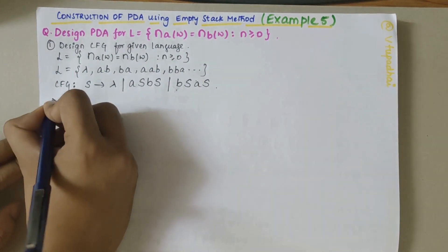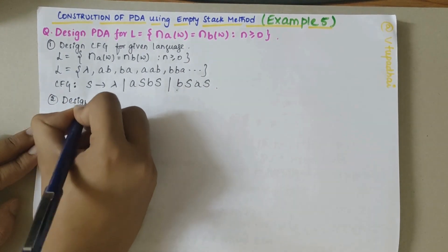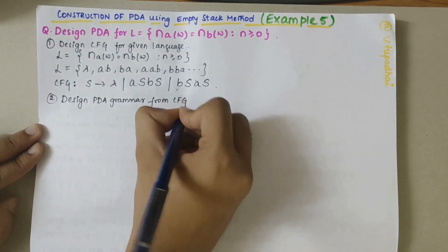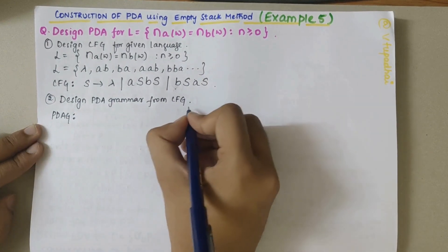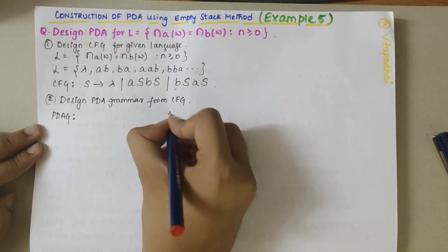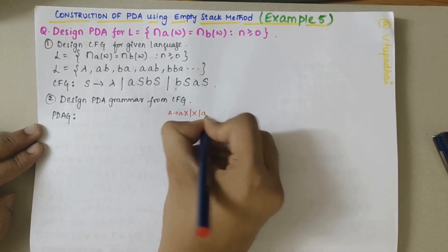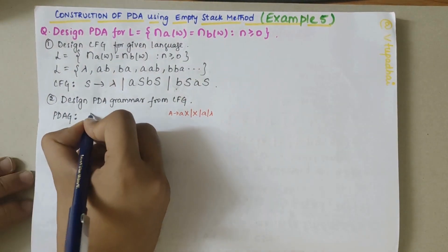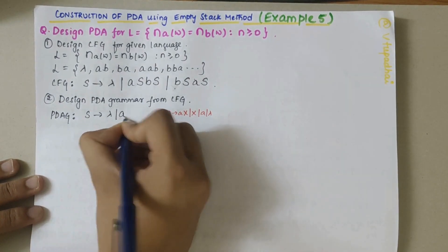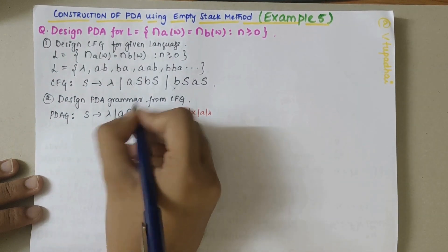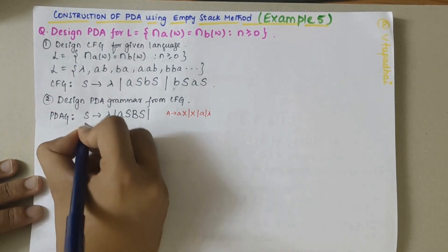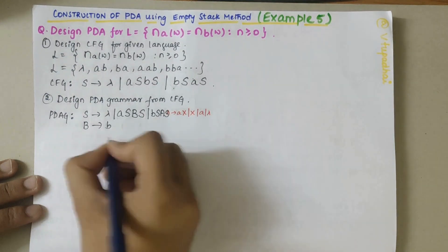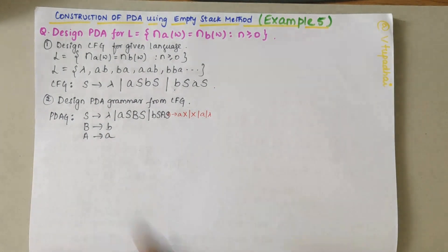The next step is to design a PDA grammar from the CFG obtained. In order to design the PDA grammar, I should remember its form: any production of the form A → a X or A → λ is a PDA grammar, where 'a' has to be a terminal and X has to be a non-terminal. So S derives lambda, then a terminal A followed by S, and since we can't write small b directly, we write capital B and S. Capital B derives small b, and similarly we write B S capital A and S, where A derives small a.